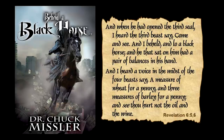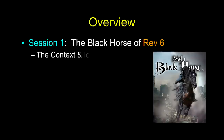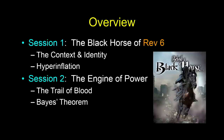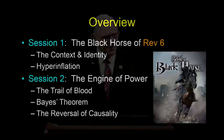We're going to first put this in context. Before we jump into the details, let's not forget where this shows up in the apocalypse. We're going to talk about the context and identity of the black horse, and then focus on the topic — which strangely enough is hyperinflation. That'll set the stage for our second session, where we'll talk about the engine of power, the trail of blood, and a strange tool called Bayes' Theorem and how they use it to reverse causality.